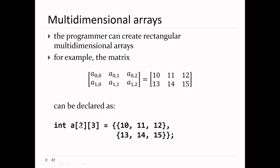So what this really is, is actually an array of arrays — an array of int arrays. The first array, a[0], is 10, 11, 12. a[1] is the array 13, 14, 15. So this thing is actually an array of two int arrays.